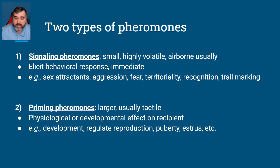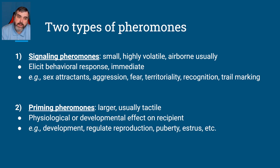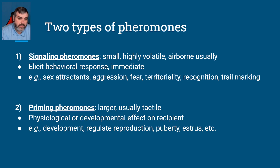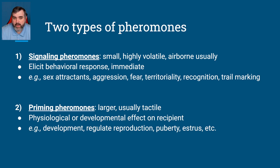Priming pheromones tend to be larger — as in a larger molecule — and are very tactile, so touch-based. They have a physiological or developmental effect on the recipient. This can cause things related to development and help regulate reproduction, such as puberty and estrus.